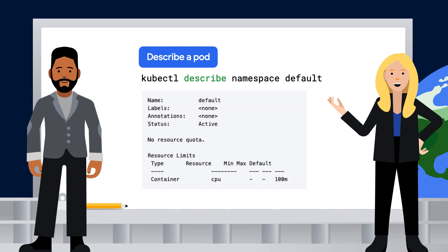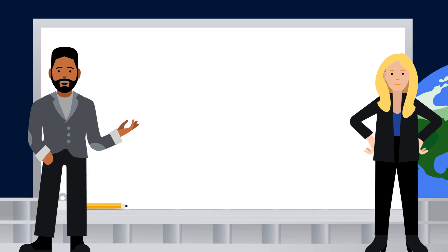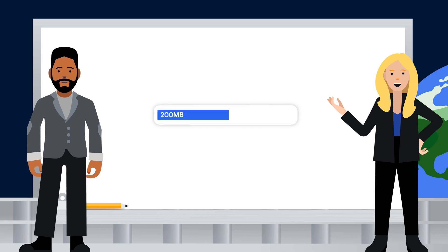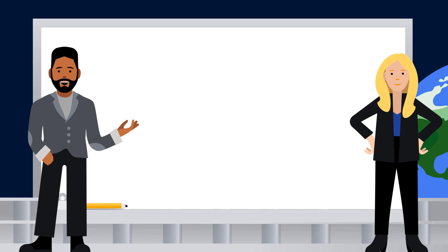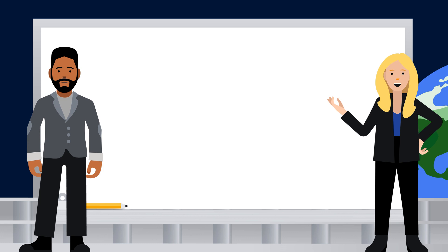You can get more info about any of these namespaces using the kubectl get and describe commands. Describing the default namespace returns something like this. Note that these details show both resource quota, if present, as well as resource limit ranges. Resource quota tracks aggregate usage of resources in the namespace and allows cluster operators to define hard resource usage limits that a namespace may consume. A limit range defines minimum and maximum constraints on the amount of resources a single entity can consume in a namespace.